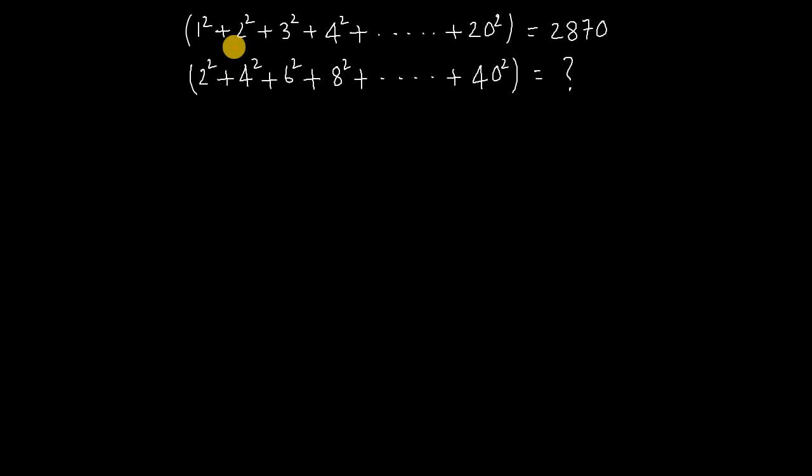Given that 1² + 2² + 3² + 4² + ... + 20² = 2870. The value of 2² + 4² + 6² + 8² + ... + 40² equals what?